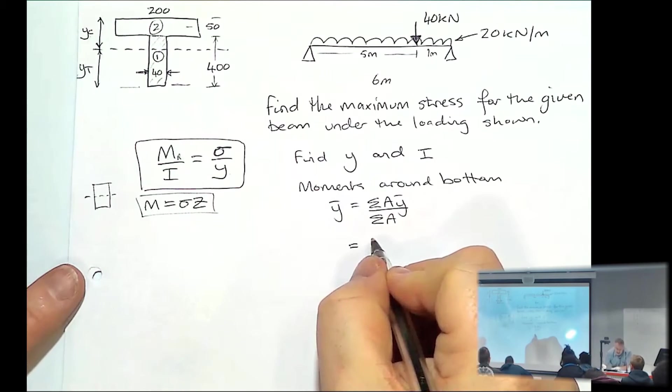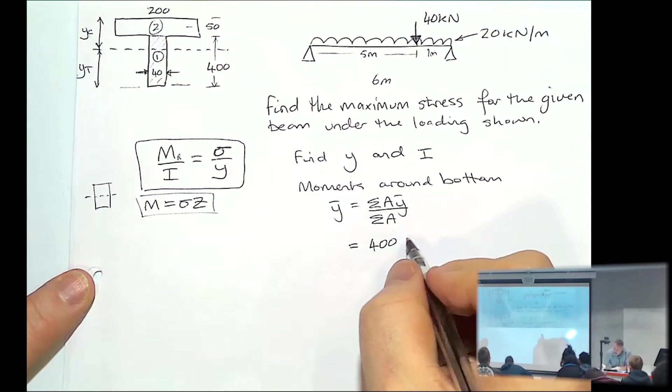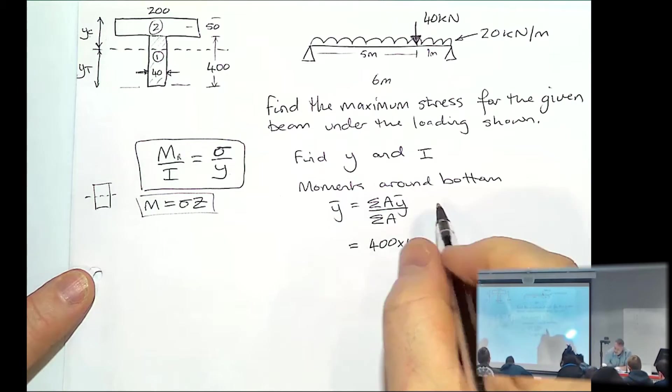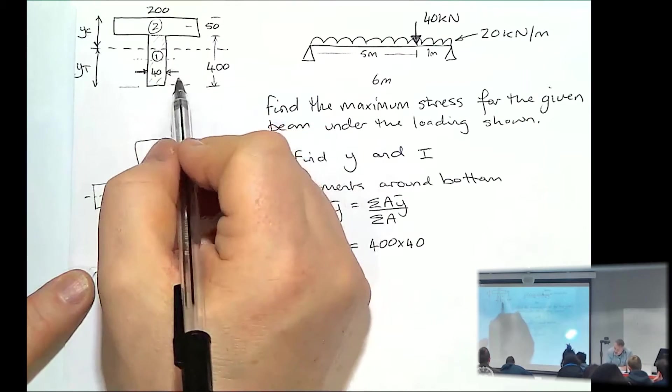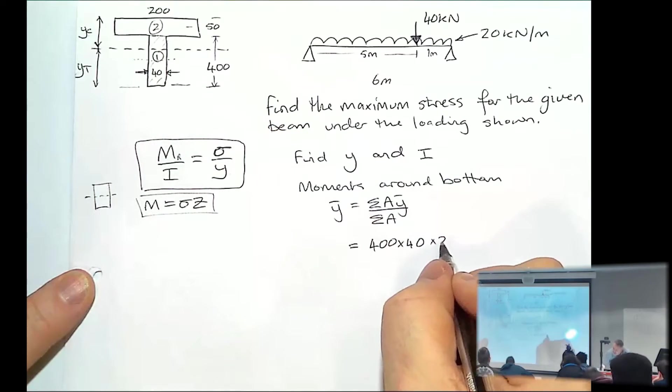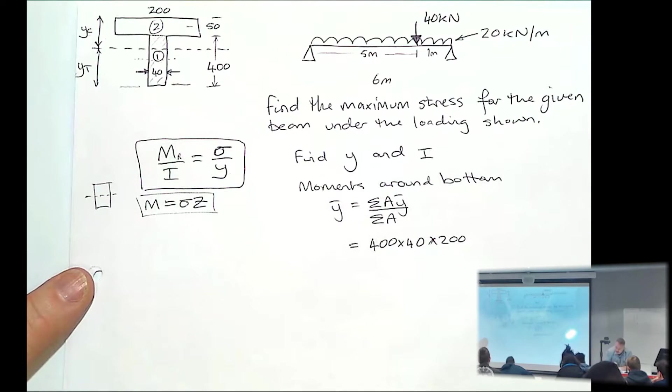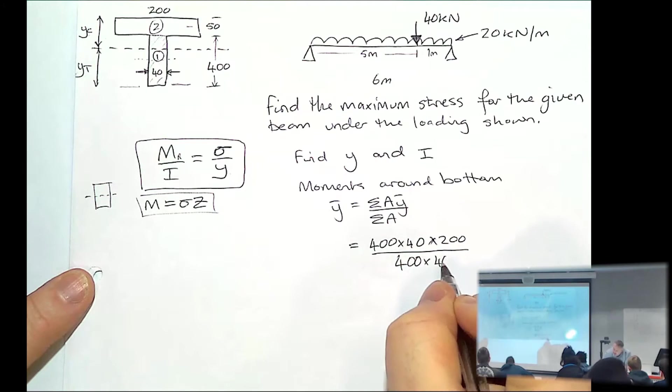So considering the bottom of the T first. So the area is 400 times by 40. And its neutral axis is 200 up, so it's halfway. And its area is 400 times by 40.